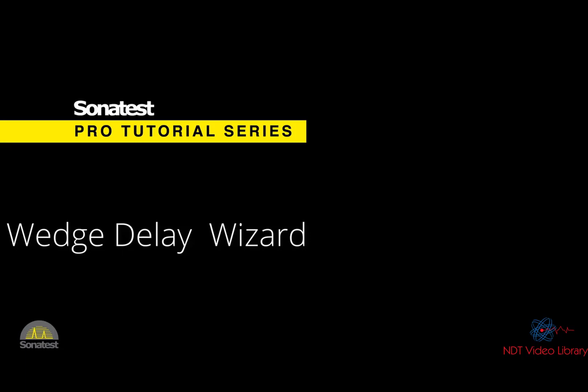In the velocity and zero calibration, we set the velocity for one angle only. The velocity of sound in an isotropic material remains constant for all angles. The zero however changes according to its related angle. This calibration wizard calibrates the zero for all angles.